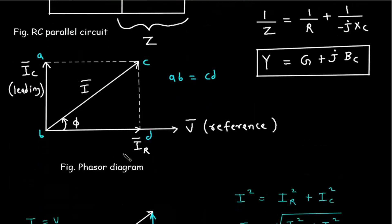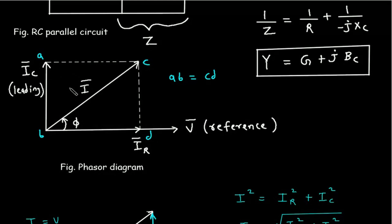Now for the phasor diagram, we will take voltage as a reference because voltage is the same across the resistance and capacitance. IR will be in phase with voltage, and IC will be leading the voltage by 90 degrees. The resultant of IC and IR will be the I phasor.